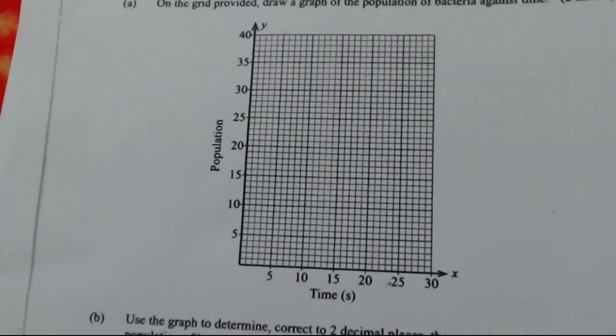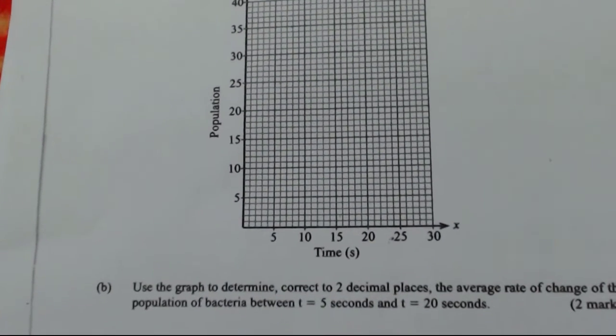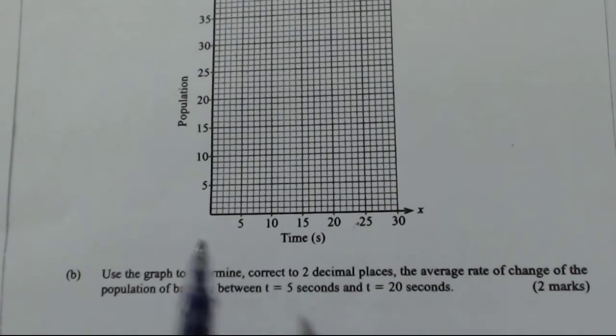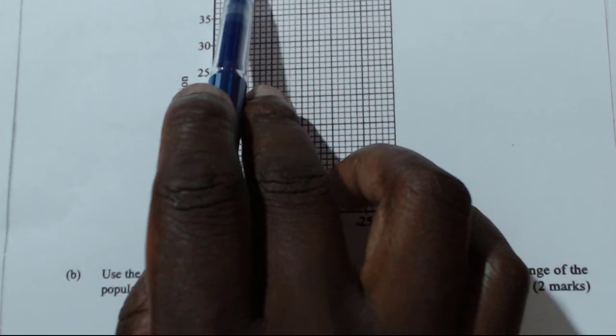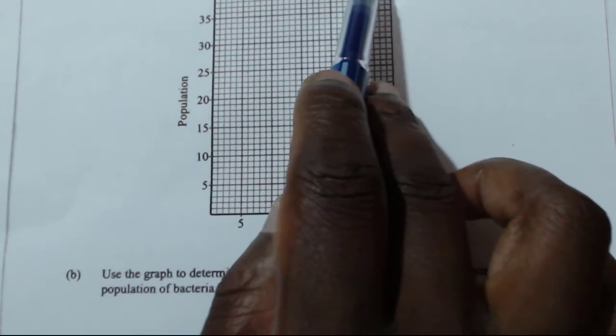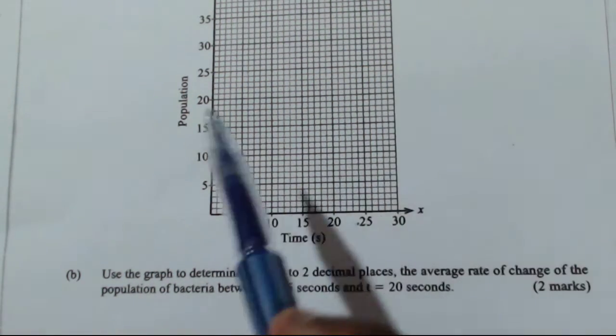So here is the graph. So the question is, part A, on the grid provided, draw a graph of the population of bacteria against time. It is drawn there.